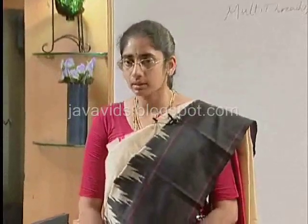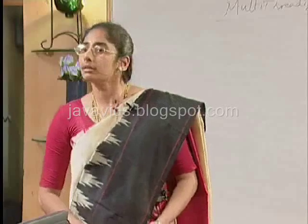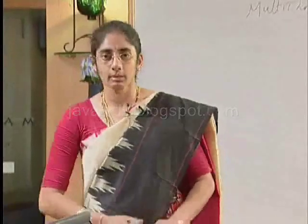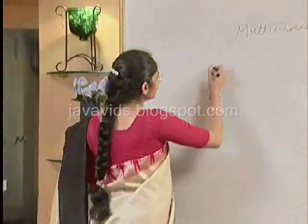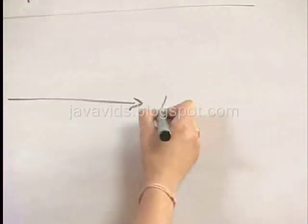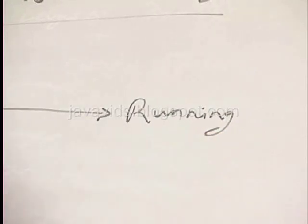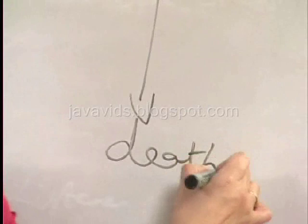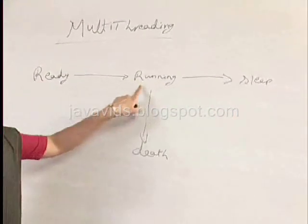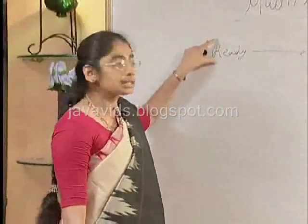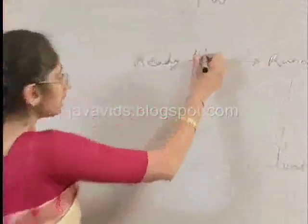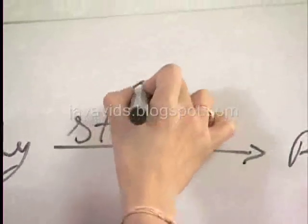Threads have their own life cycle and their own properties. There are different types of threads you can create and various ways of creating them. A thread life cycle starts with the ready state. From the ready state it moves into a running state. When you create a thread, it is in the ready state. To move from a ready state to a running state, we invoke the start method, which in turn calls the run method, and then the thread comes into a running state.